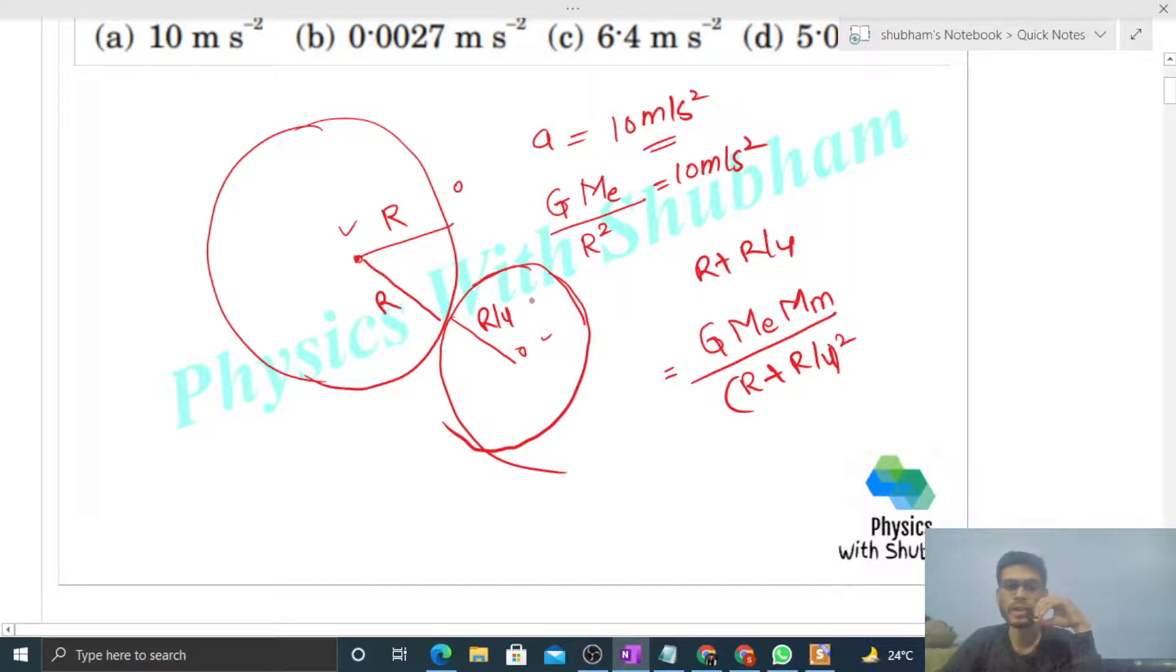So if you want to find out the acceleration of the moon, divide this force by mass of the moon, right? Net force on the moon by the Earth divided by mass of the moon will give you the acceleration of the moon. So mass of moon cancels. So what we are getting is mass of the Earth into capital G.